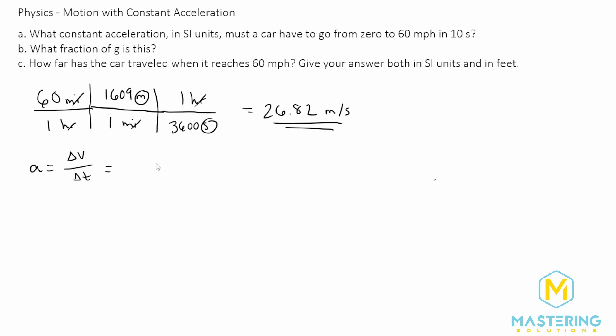We just figured out the velocity in standard units is 26.82 meters per second divided by 10 seconds. So now we'll have meters per second per second, or meters per second squared, which is what we need for acceleration.